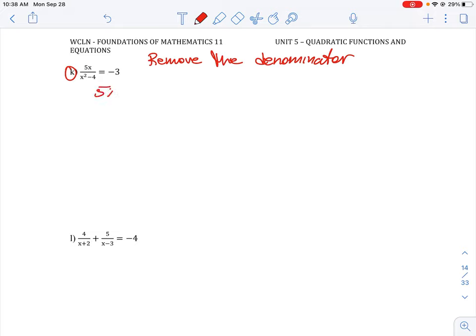So if we rewrite this expression, we can have the x squared minus 4 as one term, and then we have a negative 3. So what we can do here is 5x is equal to negative 3 times x squared minus 4. So essentially what we're doing is we're multiplying both sides by x squared minus 4, and then we're canceling it out.